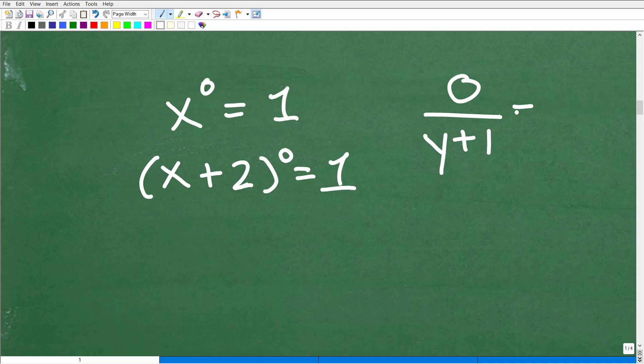Y plus one down here is the denominator. So this is going to be equal to zero. And if I have something like w minus three over zero, well, this right here would be an undefined situation.